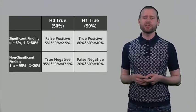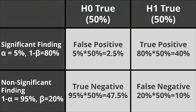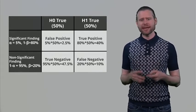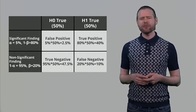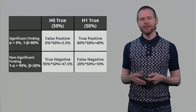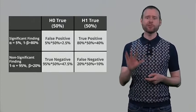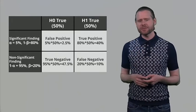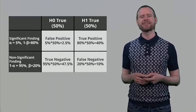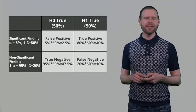Now let's move to the situation where the null hypothesis is true. Here we have a 5% error rate. We multiply this 5% times the 50% probability that the null hypothesis is true, and in 2.5% of the time we will conclude that there is a false positive. Now we come to the most likely outcome in this very typical situation — a true negative. There is a 95% probability that we will conclude nothing is going on, multiplied by the 50% probability that the null hypothesis is true, which gives us 47.5%. So that is the highest number of these four possible outcomes.